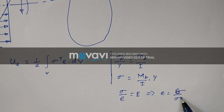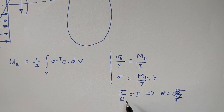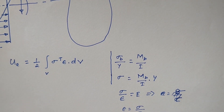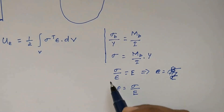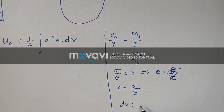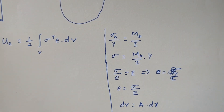Strain is equal to stress divided by Young's modulus. And we can also write that since for a three-dimensional element, dV can be written as dA times dx. For this small elemental length, we can write that as dA times dx.